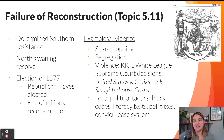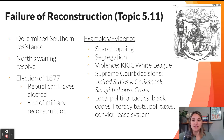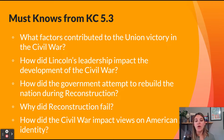The contested election of 1877 saw Republican Hayes elected but compromised to end military reconstruction, which basically ended the federal government's involvement in the South and its efforts to protect the rights of African Americans. Key must-knows include: what contributed to the Union victory, how did Lincoln's leadership impact the Civil War, what did the government do to rebuild the nation, why did reconstruction fail, and how does the Civil War impact views on American identity?